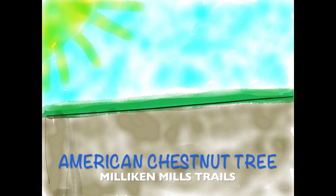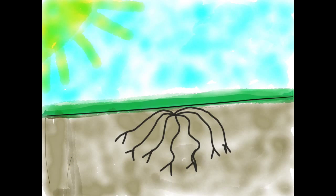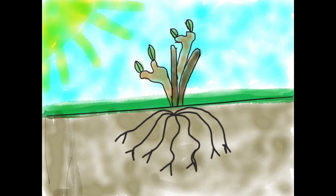We're going to tell you about the Blight Cycle of the American Chestnut Tree. This is a rare tree found in the Milliken Mills Woods trail area.